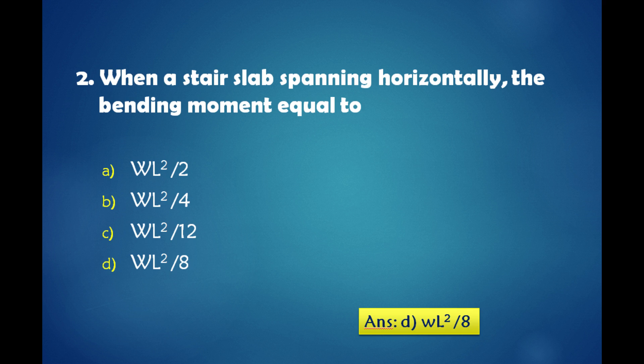When a stair slab spanning horizontally, the bending moment is equal to: a) wl² by 2, b) wl² by 4, c) wl² by 12, d) wl² by 8. The answer is: when a stair slab spanning horizontally, the bending moment is equal to wl² by 8.